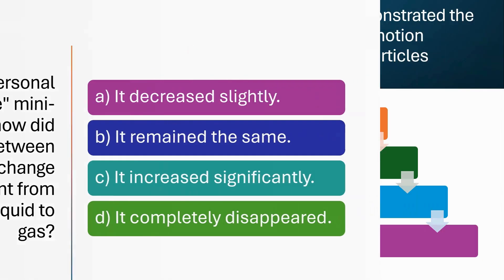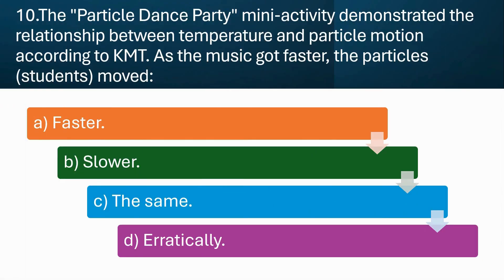The particle dance party mini-activity demonstrated the relationship between temperature and particle motion according to KMT. As the music got faster, the particles — students — moved: A. Faster. B. Slower. C. The same. D. Erratically.